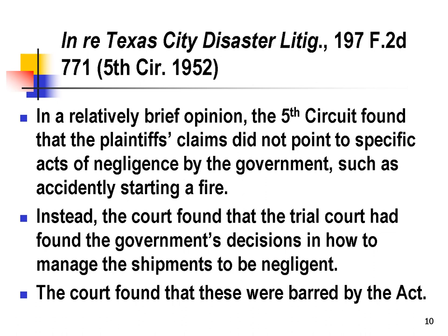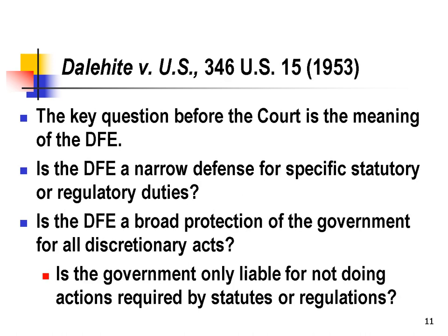This decision was then appealed to the U.S. Supreme Court. The key question before the Court is the meaning of the discretionary function exception. This is the first time the Supreme Court is construing the Federal Tort Claims Act and the discretionary function exception. The Court has to decide whether it's a very narrow defense for specific statutory or regulatory duties, or whether it's a broad protection for all discretionary acts. The Court spends some time looking into the history of the act and the congressional findings surrounding it to determine what Congress really intended.